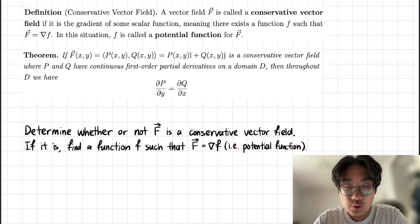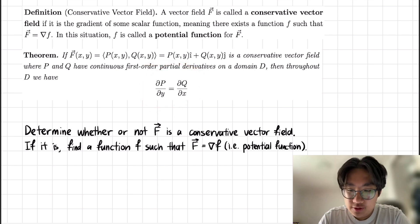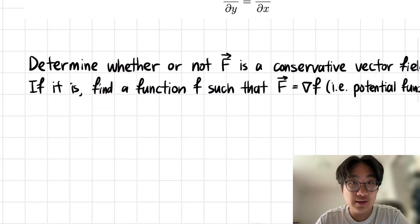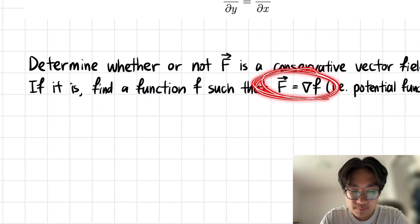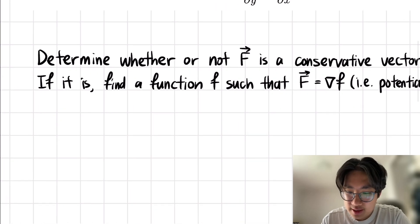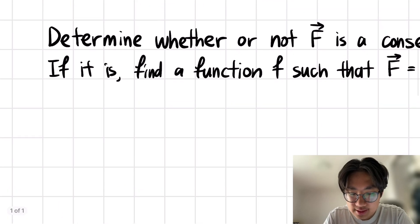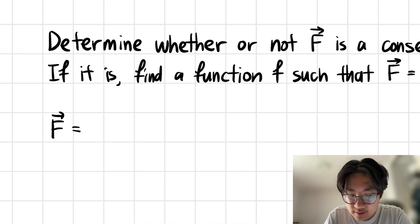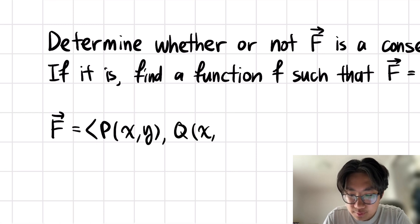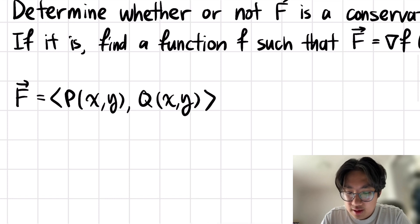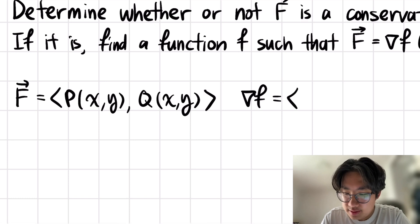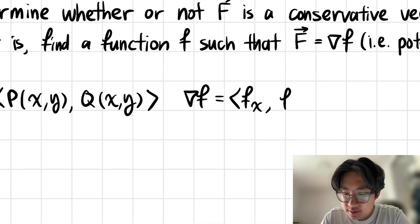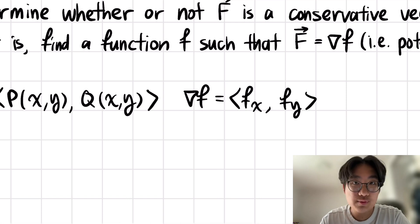Before I go into this, I'll go over some quick intuition as to why this theorem holds true at all. If we look at the condition for what it means for a function to be a potential function, we can express F as P of xy and Q of xy. And the gradient of f, or del f, we can express as f sub x and f sub y, which are the partial derivatives with respect to x and y — or in partial notation, partial f partial x and partial f partial y.